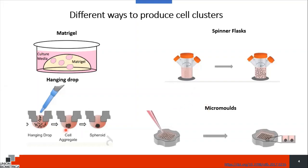Another method used more frequently now is the hanging drop method. Several companies make cell clusters and spheroids using this method so you could buy them. It involves layering a single cell suspension or different cell type suspensions into a drop which hangs, and then cells naturally aggregate by gravity and form a spheroid. This is a great method to grow spheroids, including those that contain several types of cells. However, it's not really a high-throughput method because if, for example, in one of the drops a spheroid didn't form, then that well cannot be used for any further analysis.